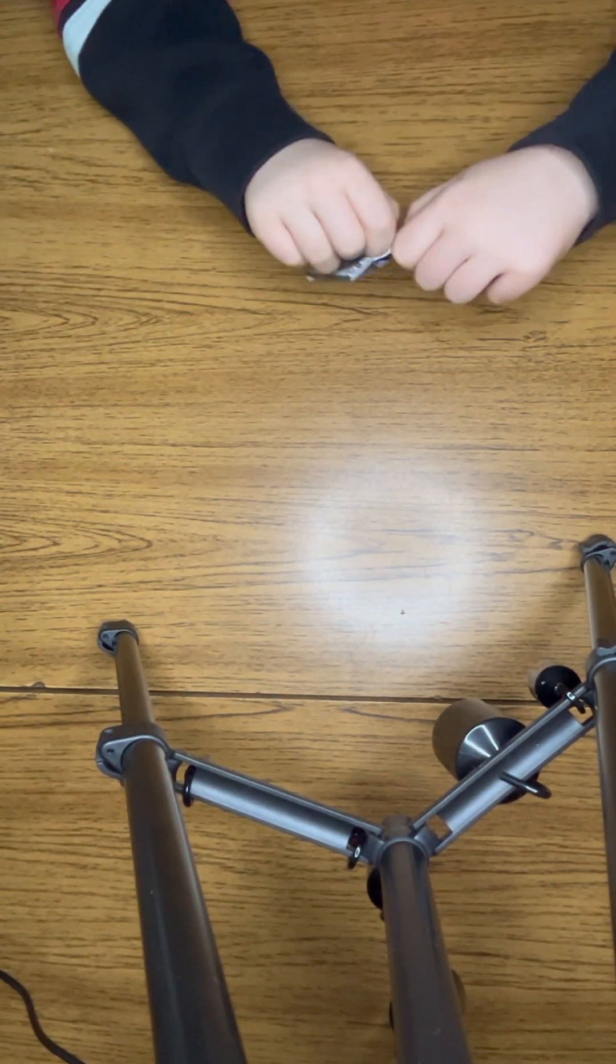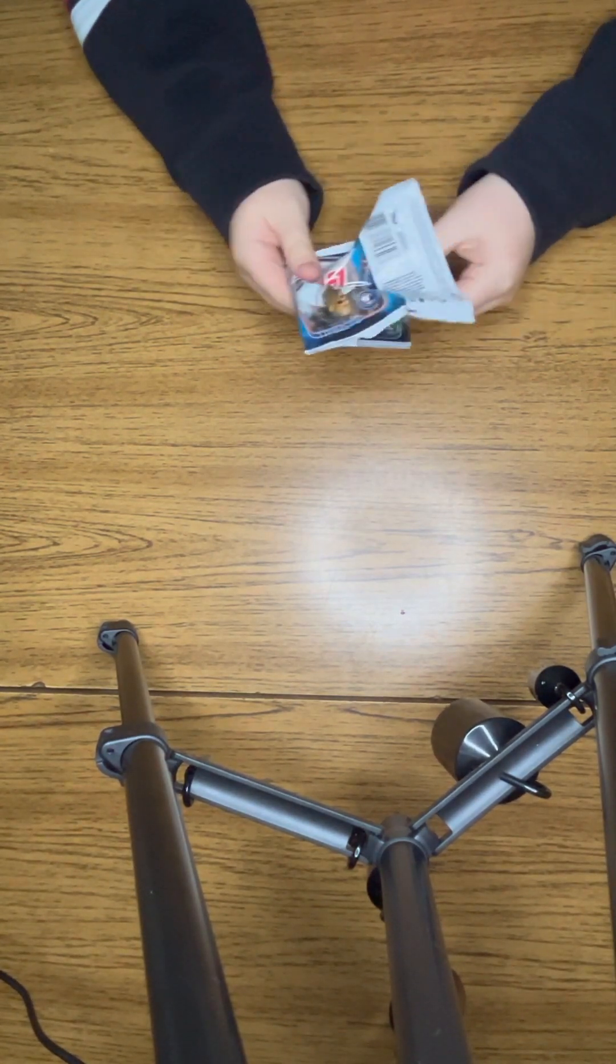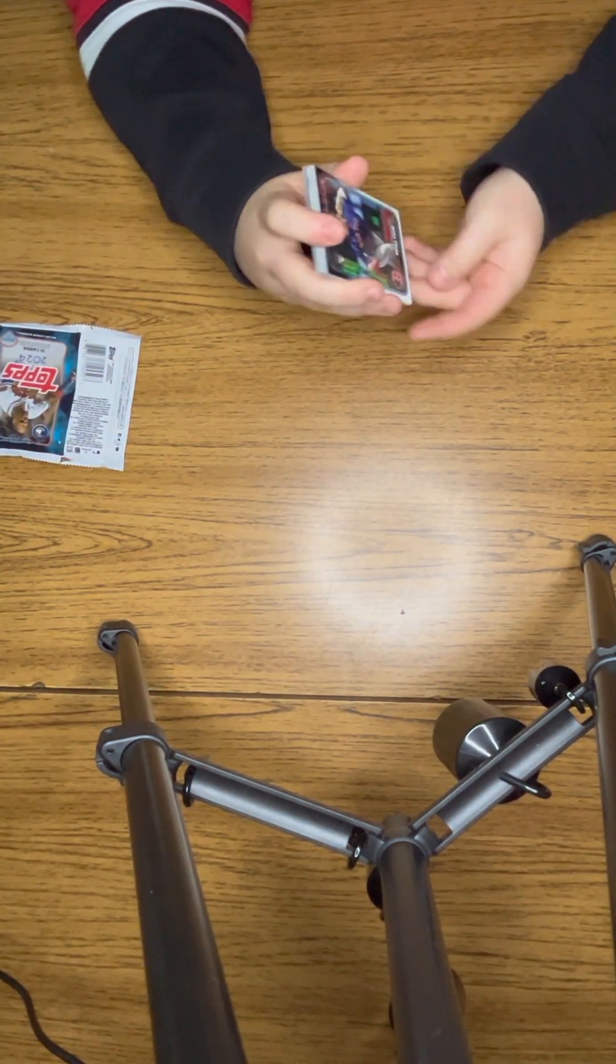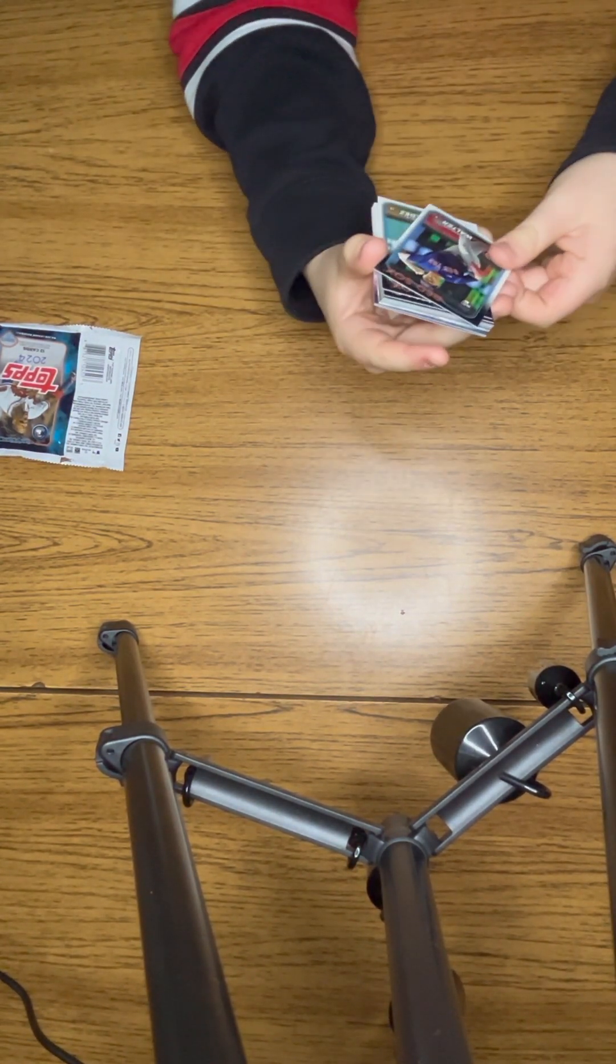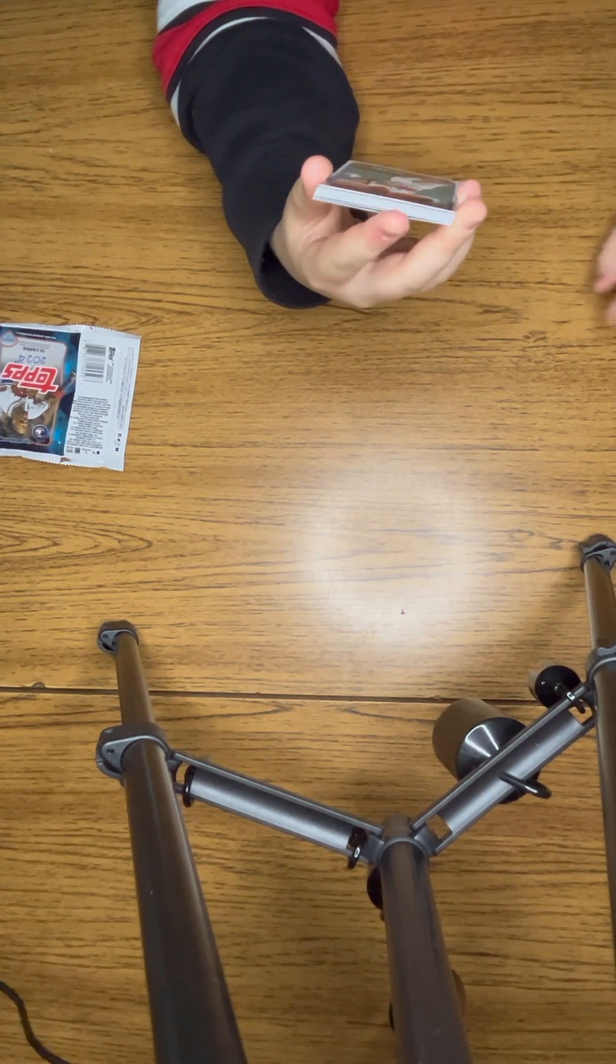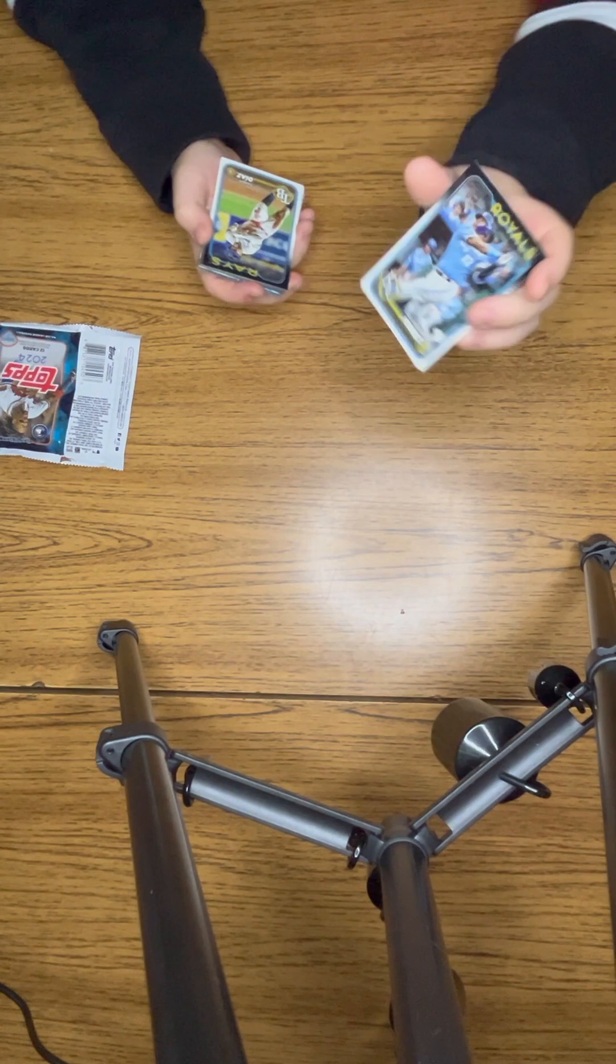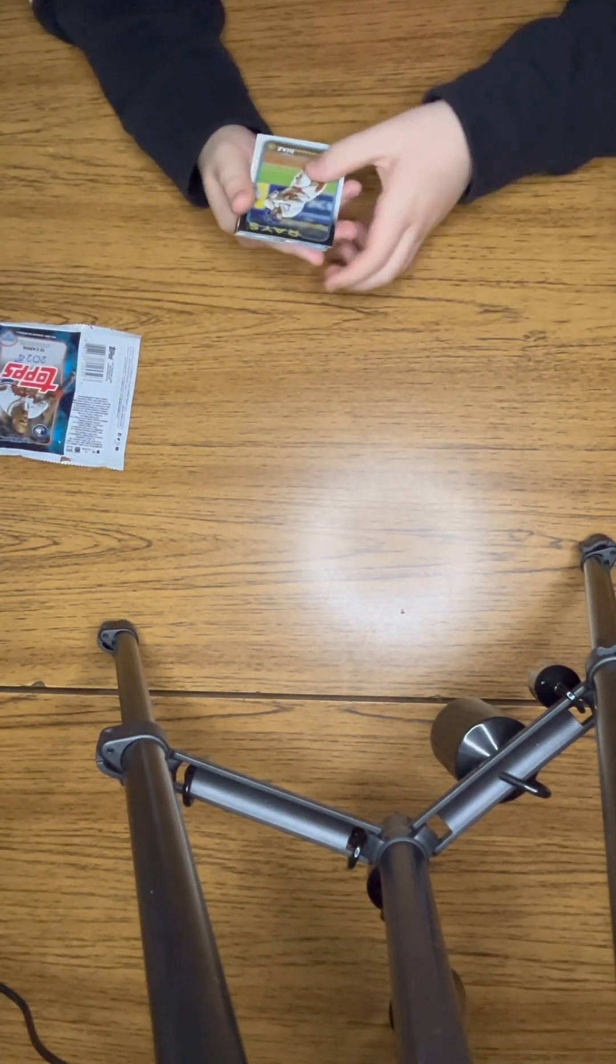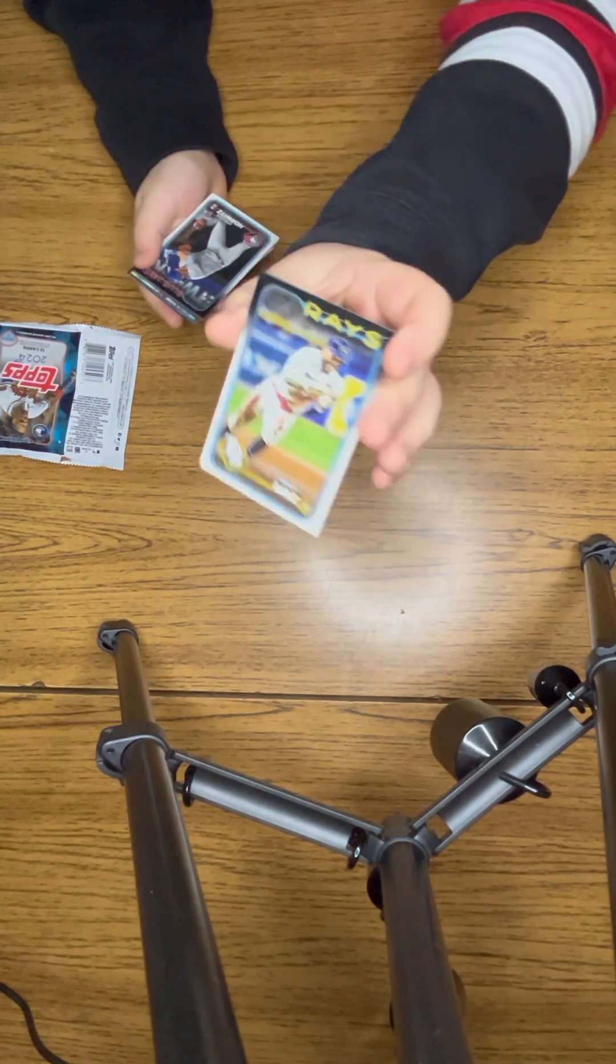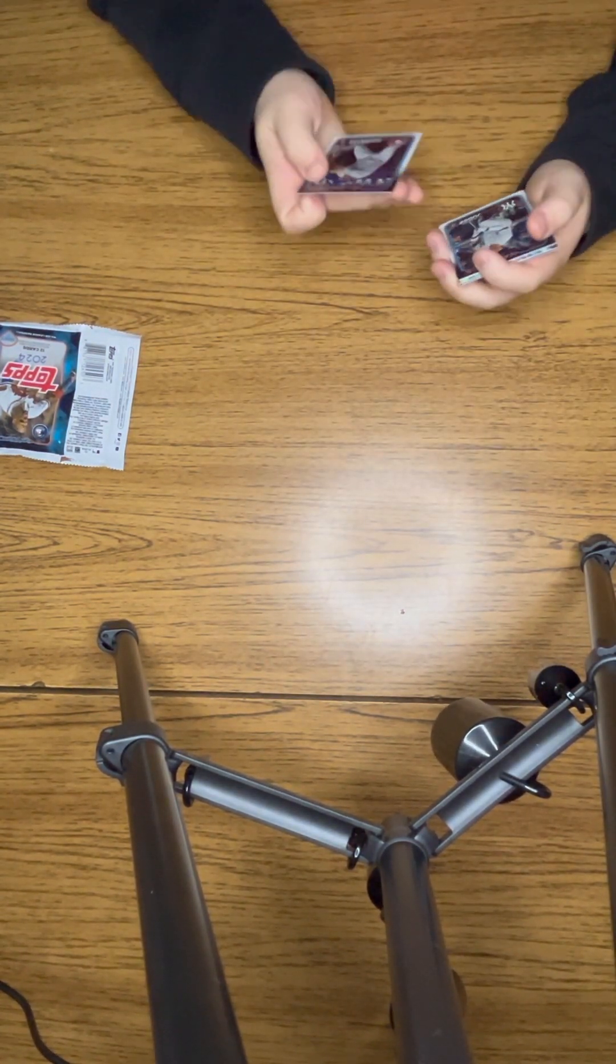For our first pack we have, to start off, a rookie card of Brandon Walter from the Red Sox, Emmanuel Valdez from the Red Sox, Salvador Perez from the Royals, Yandy Diaz from the Rays, and Spencer Horowitz rookie card.